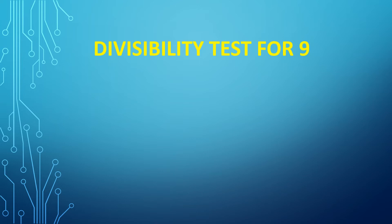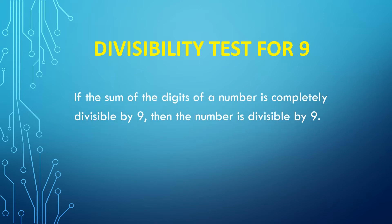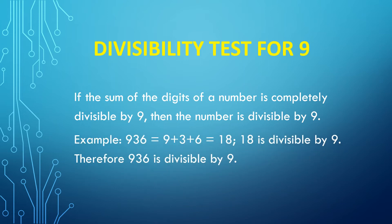Divisibility test for 9: if the sum of the digits of a number is completely divisible by 9, then the number is divisible by 9. The test for 9 works the same way as the test for 3, but here you check the table of 9. For example, 936 — when you add the digits, 9 plus 3 plus 6, the answer is 18. Since 18 is divisible by 9, therefore 936 is divisible by 9.